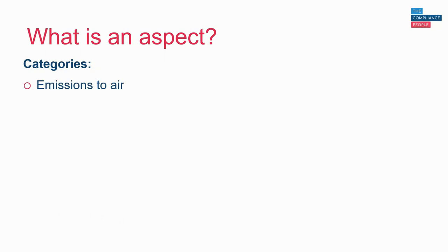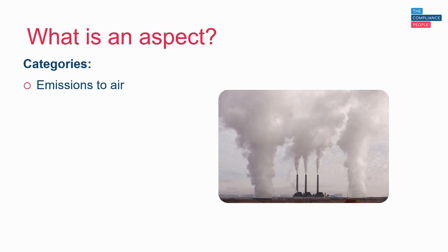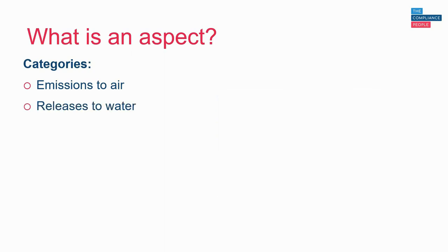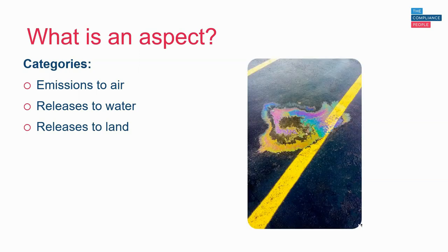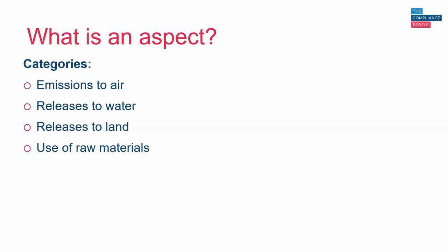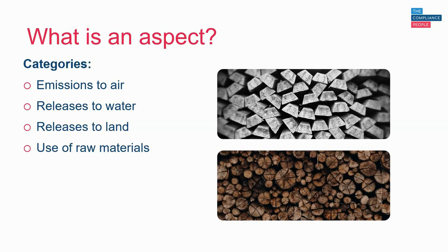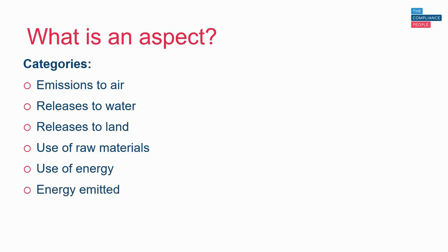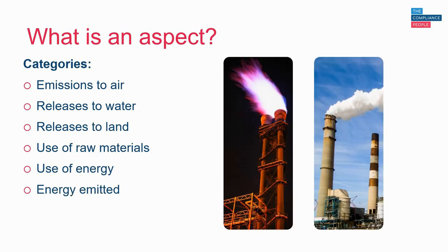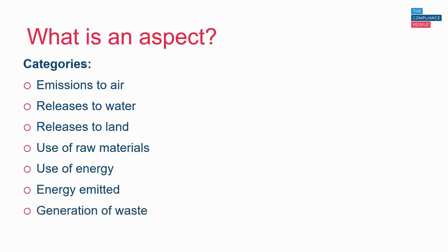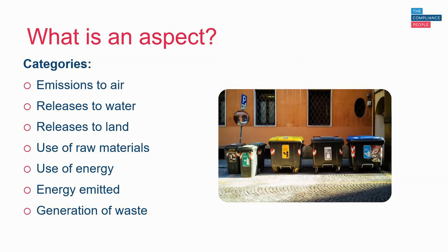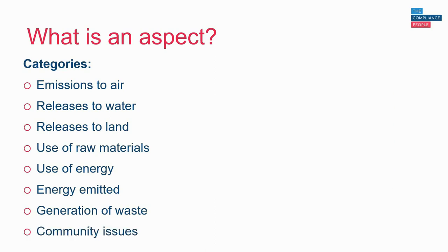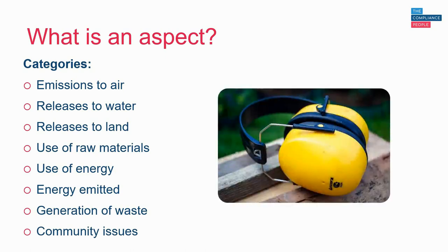Emissions to air — so aspects under this category could be things like greenhouse gas emissions from a stack. Releases to water, such as domestic sewerage or trade effluent. Releases to land, for example a spill of oil. Use of raw materials such as metal or wood. Use of energy, with electricity and gas use as examples. Energy emitted, such as heat or steam from a process. Generation of waste — listing all waste streams such as general waste, mixed recycling, and hazardous waste. And community issues, such as noise or light pollution.